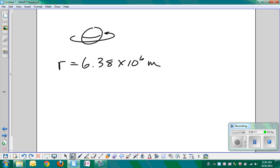As the Earth rotates through one revolution, a point on the equator traces out a circular path whose radius is equal to the radius of the Earth, which is 6.38 × 10^6 meters. That's the radius of Earth.